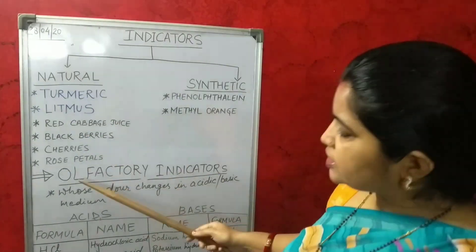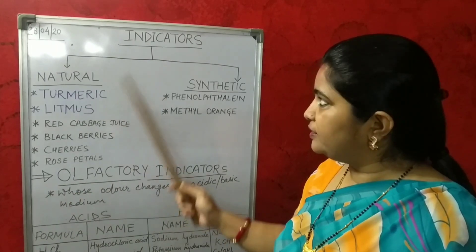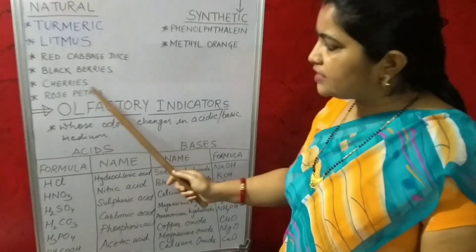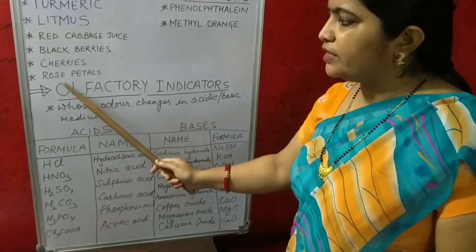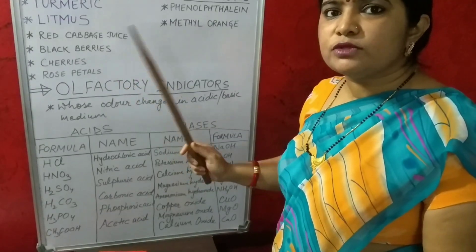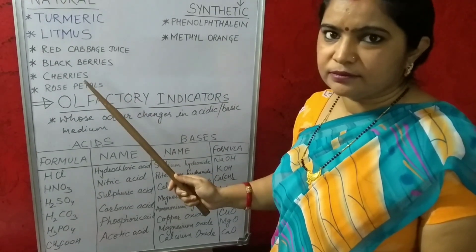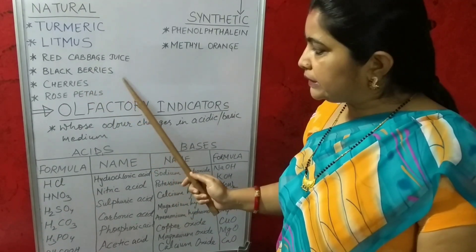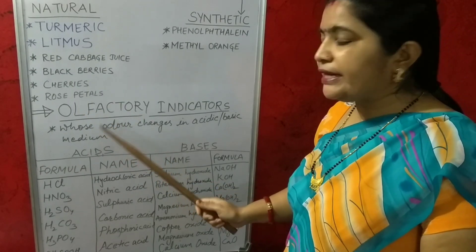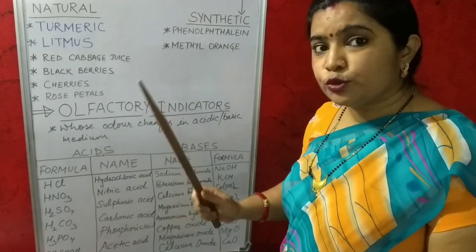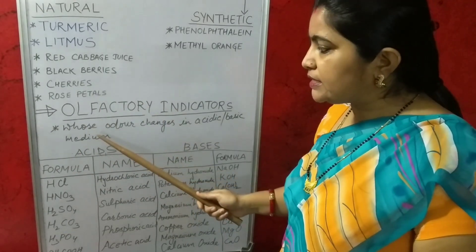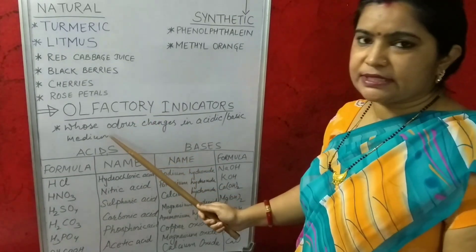Now, one more important indicator is the olfactory indicator. What is the meaning of olfactory here? The word olfactory is related to smell or odor. This type of indicator is used to detect through smell or odor whether a substance is acidic or basic.